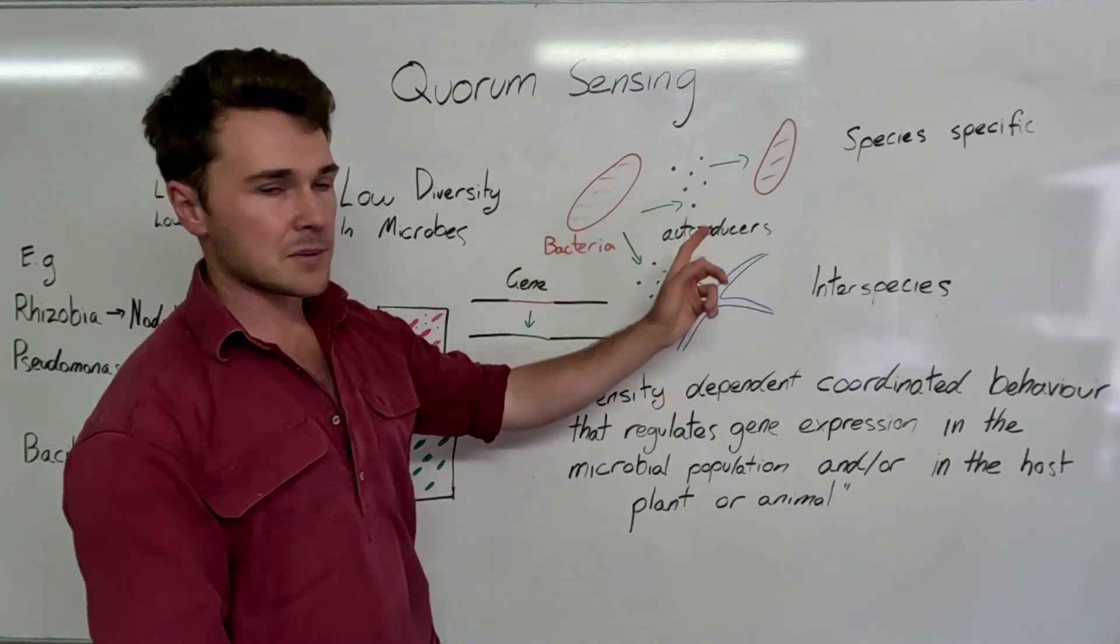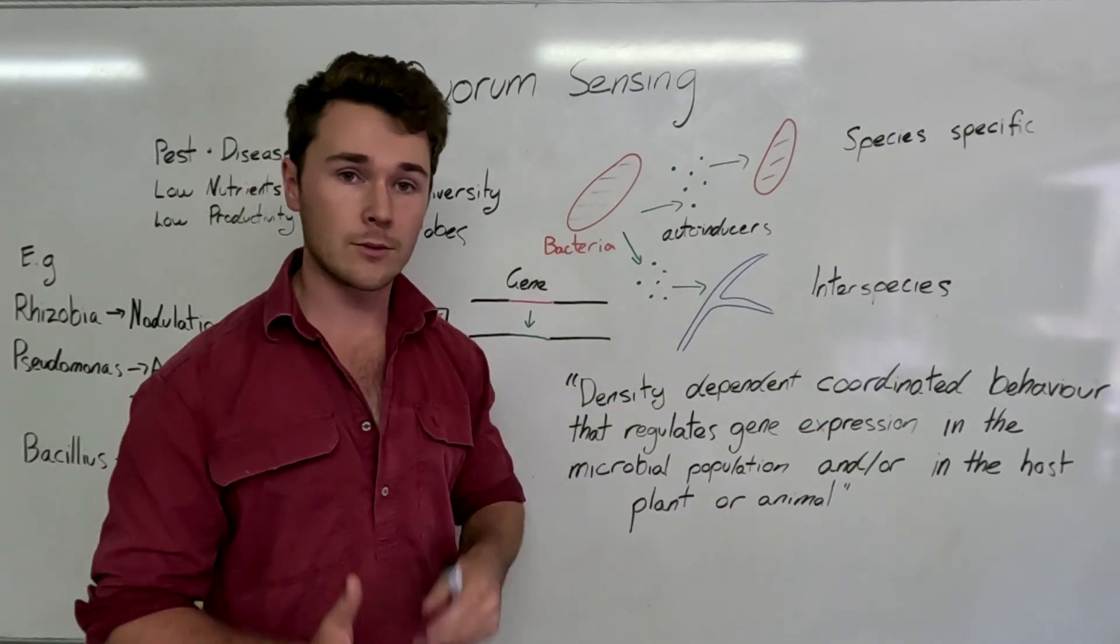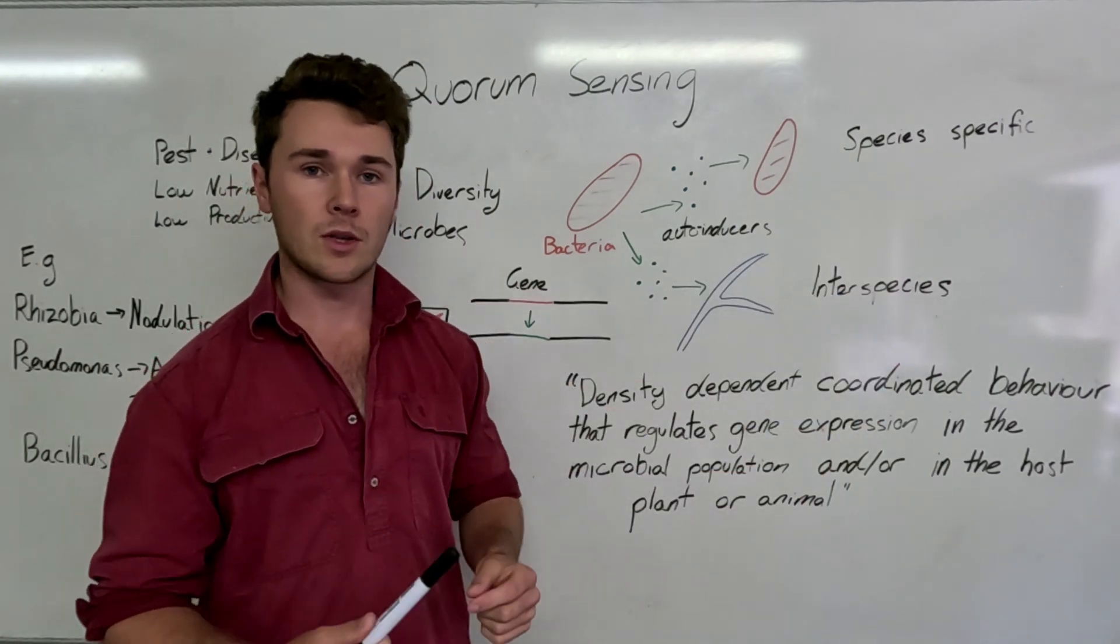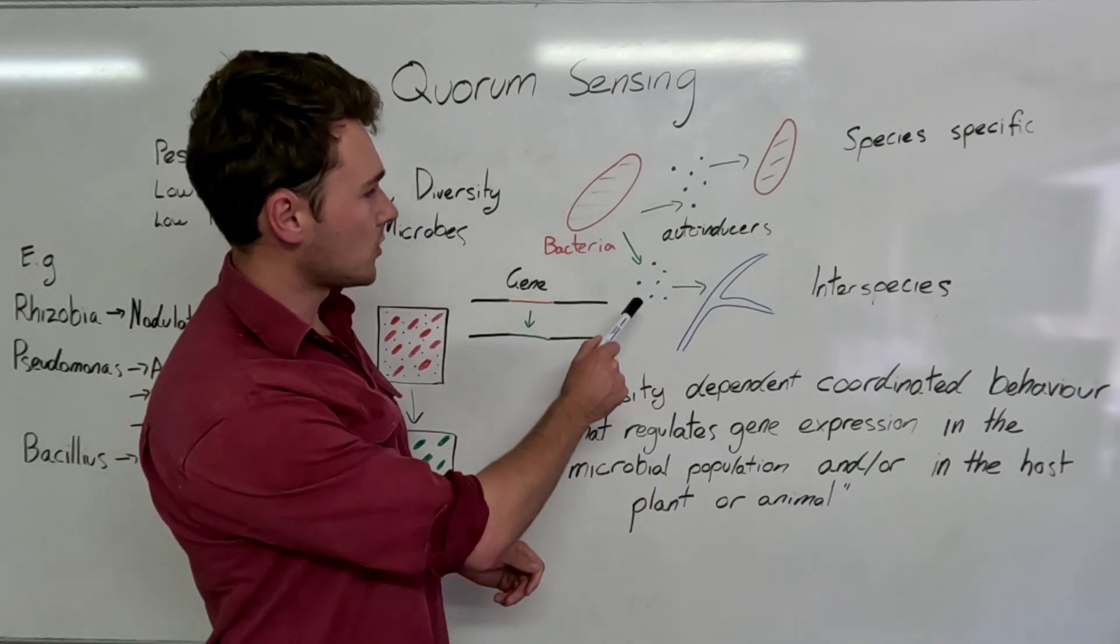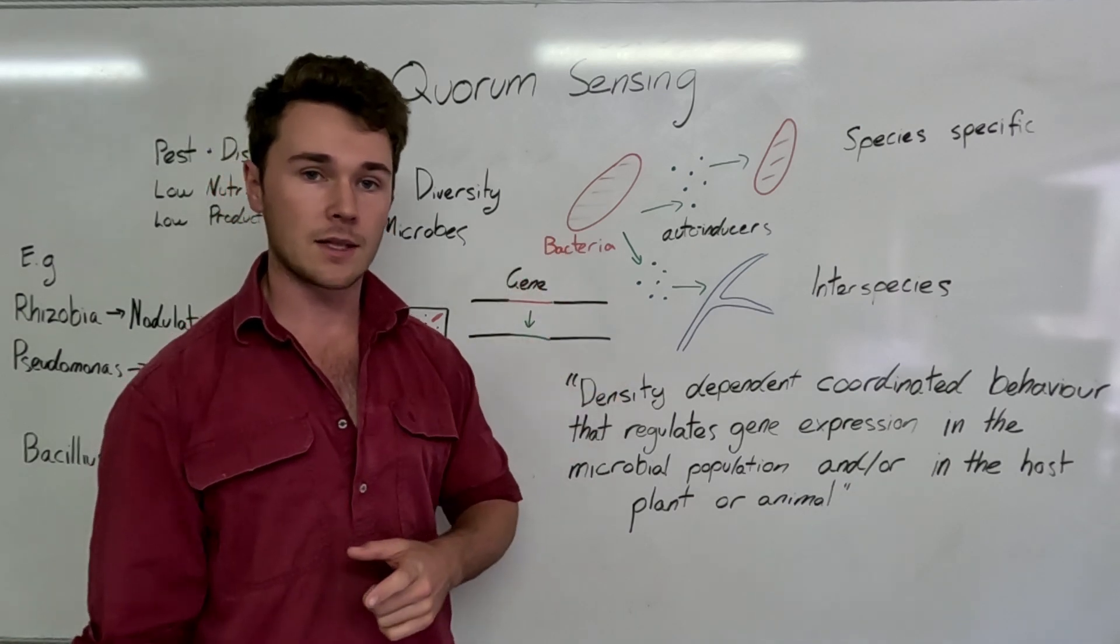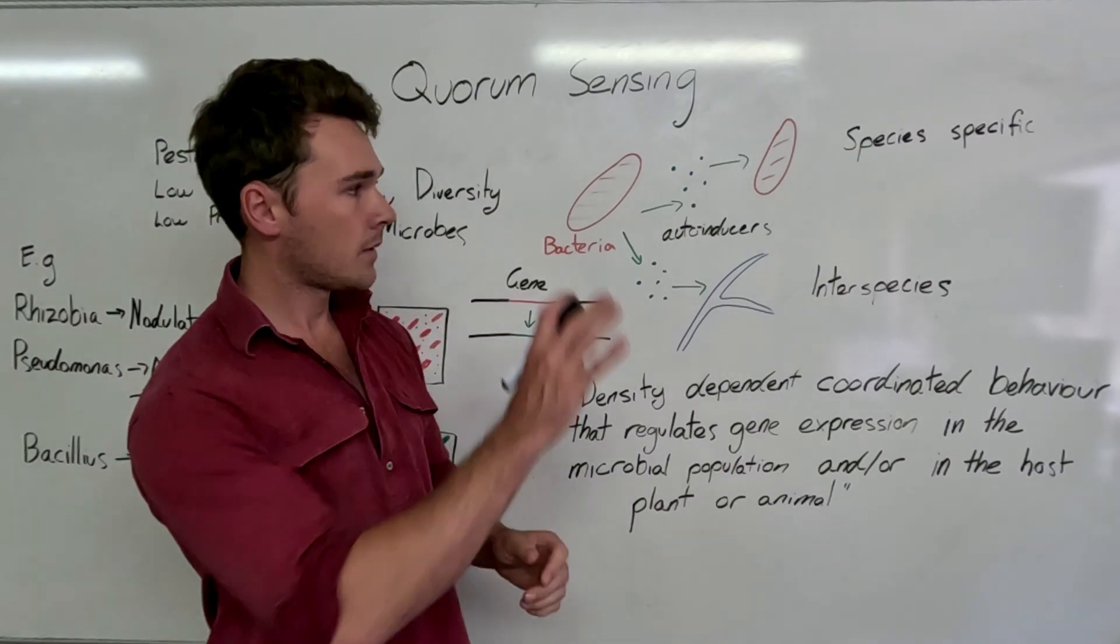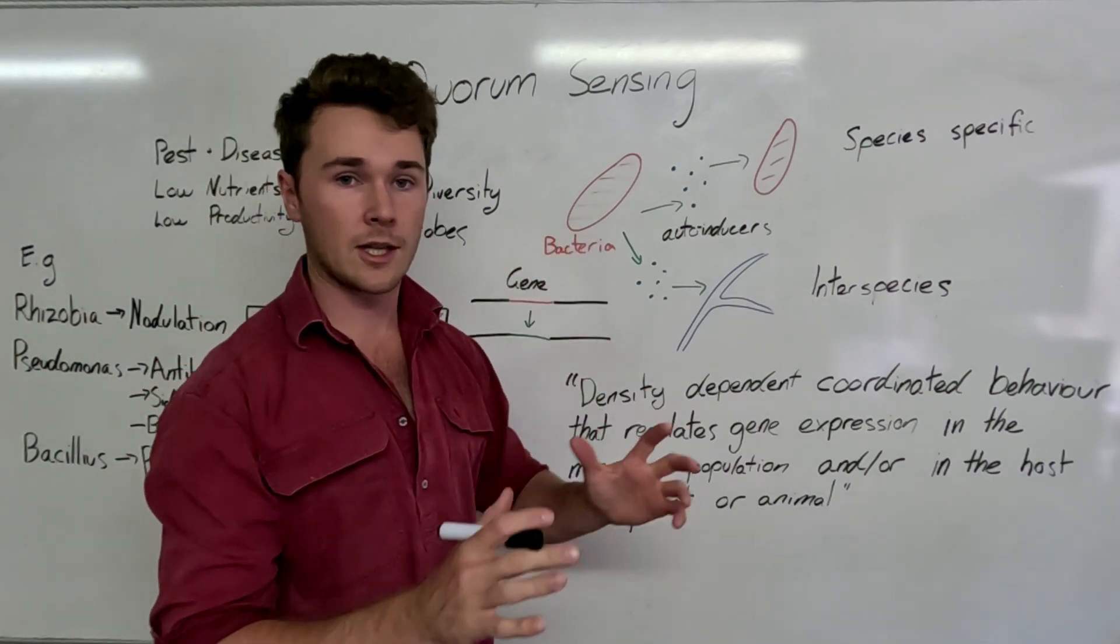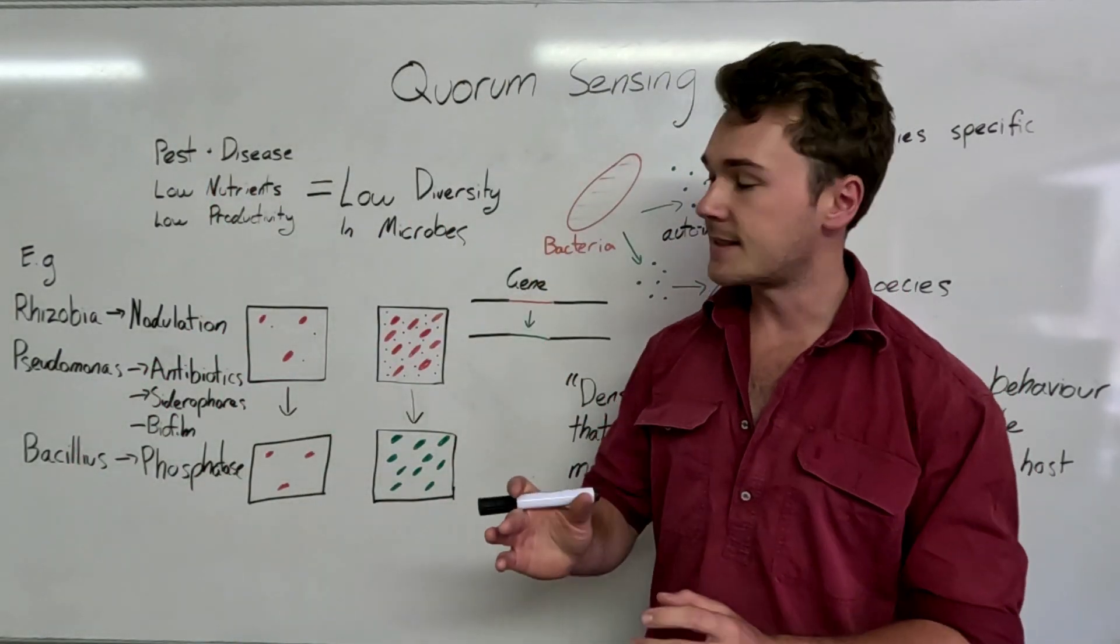When it's the same species, it's species specific. So they can communicate in their own language. But a lot of microbes can also communicate in a range of different languages, they're bilingual, which means the auto-inducers released by a certain bacteria species can then be picked up by another bacteria species or a fungal species or plants and animals. Simply, our microbes can communicate with each other. But that's not quorum sensing. Quorum sensing is when you have a specific density of that.